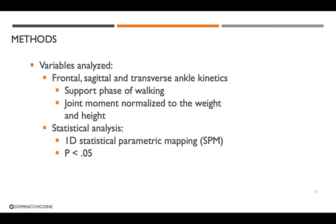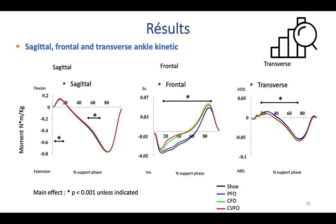The variables analyzed were the frontal, sagittal, and transverse ankle kinetics during the support phase of walking. Joint moments were normalized to the weight and height of each participant. We used one-dimensional statistical parametric mapping with p < 0.05. You can see here the main effect at the ankle joint in the sagittal, frontal, and transverse planes.